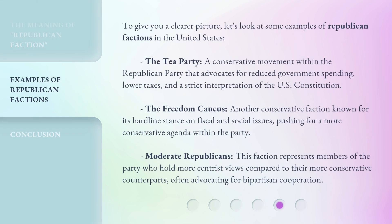To give you a clearer picture, let's look at some examples of Republican factions in the United States. The Tea Party: a conservative movement within the Republican Party that advocates for reduced government spending, lower taxes, and a strict interpretation of the U.S. Constitution. The Freedom Caucus: another conservative faction known for its hardline stance on fiscal and social issues, pushing for a more conservative agenda within the party. Moderate Republicans: this faction represents members of the party who hold more centrist views compared to their more conservative counterparts, often advocating for bipartisan cooperation.